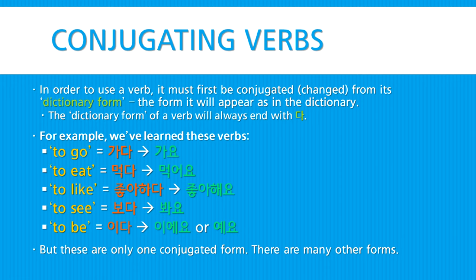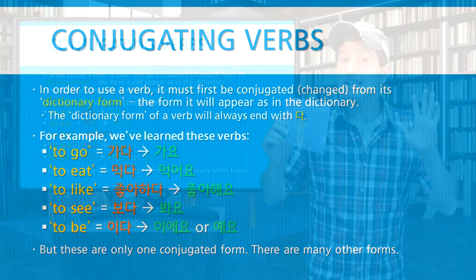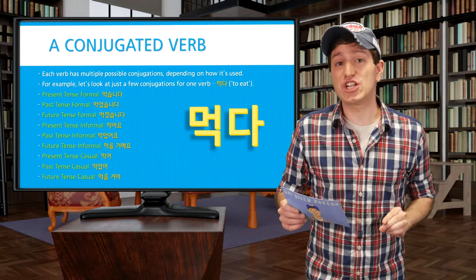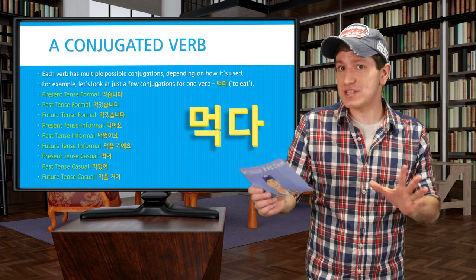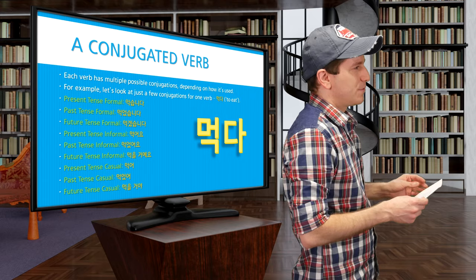For example, we learned the verbs 가다 (to go) as 가요; 먹다 (to eat) as 먹어요; 좋아하다 (to like) as 좋아해요; 보다 (to see) as 봐요; and 이다 (to be) as 이에요 or 예요. But these are just one conjugated form, and there are others that we'll have to learn about in the future too.